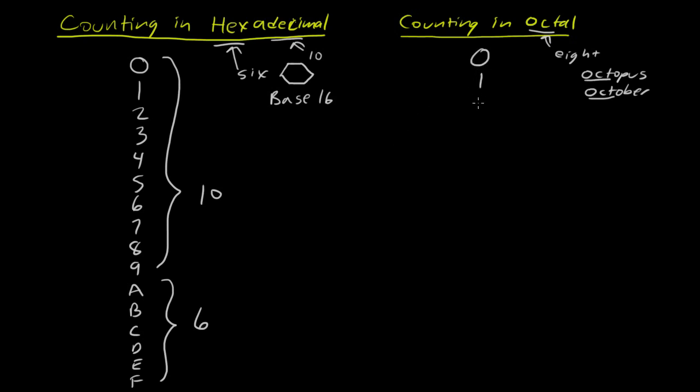And in octal land, we just have zero, one, two, three, four, five, six, and seven. All right? Because, remember, zero is one of the possibilities. So, you know, you might think, oh, there's eight. No, no, no. We have zero through seven. Just like in base ten, we have zero through nine. Okay. So, but the basic idea behind counting is the same as before.